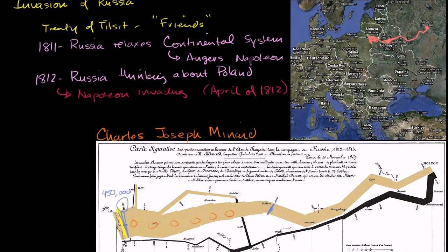Eventually he is able to have a battle with the Russians in August at Smolensk. Napoleon was victorious, but the Russians retreated again. It wasn't a decisive victory over the Russian army.